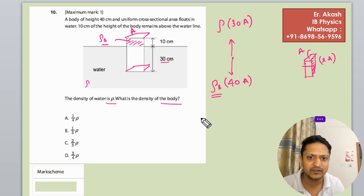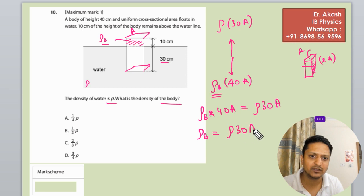So rho b times 40 A equals rho times 30 A. Therefore, rho b equals rho times 30 A divided by 40 A, which simplifies to 3/4 rho.